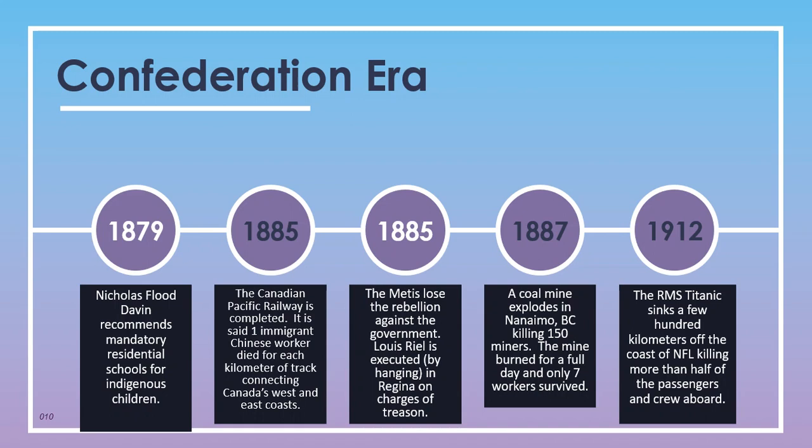Also in 1885, the Métis lost their rebellion against the government and Louis Riel was executed by hanging in Regina on charges of treason. In 1887, a coal mine exploded in Nanaimo, BC, killing 150 miners — the mine burned for a full day and only seven of the workers present survived this tragedy.